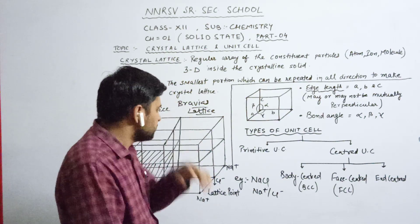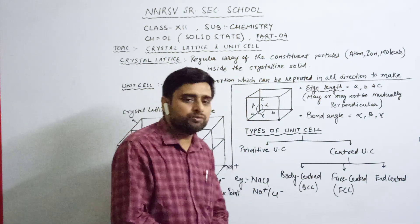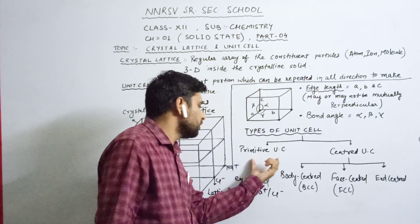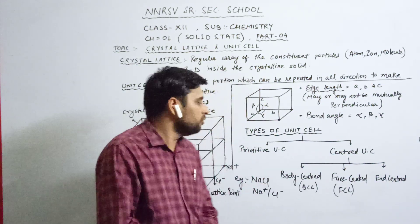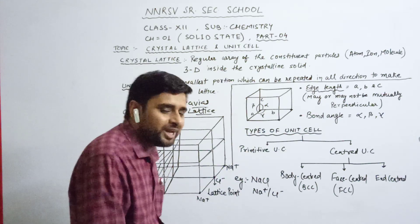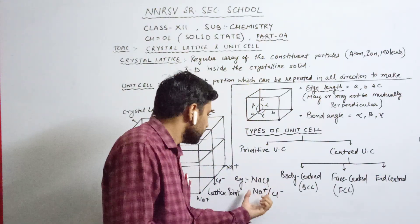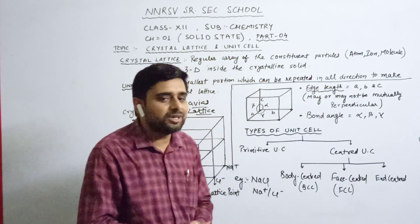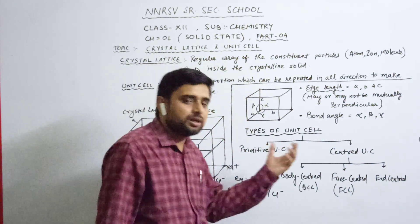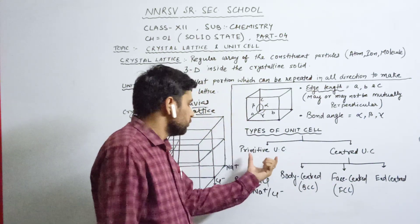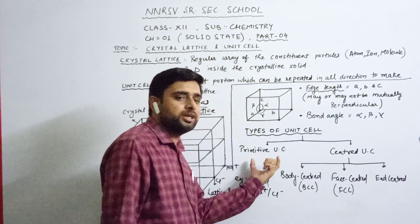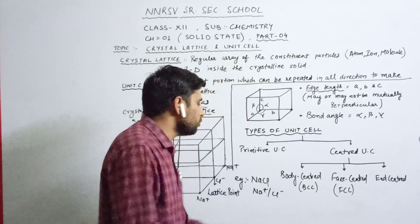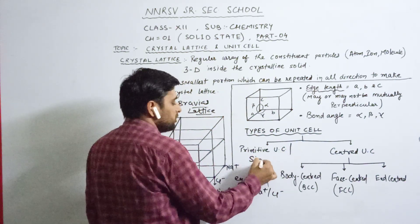Now, coming to the types of unit cell. There are two types of unit cells: primitive and centered. The primitive unit cell has atoms only at the corners of the unit cell. It is also known as the simple cubic unit cell.